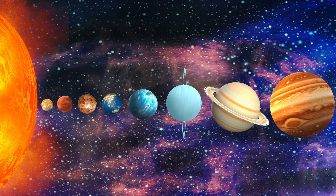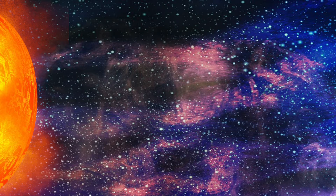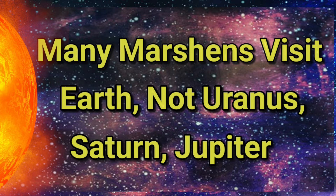So the mnemonic I want to show you goes a little something like this: Many Martians visit Earth, not Uranus, Saturn, Jupiter. Many Martians visit Earth, not Uranus, Saturn, Jupiter.